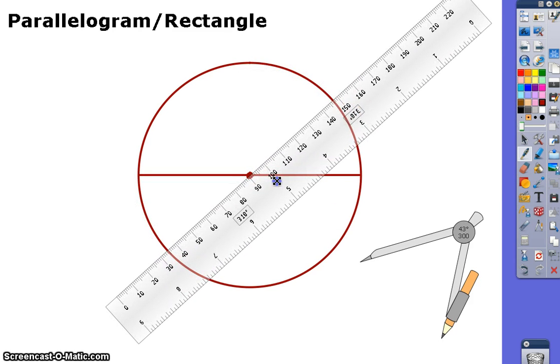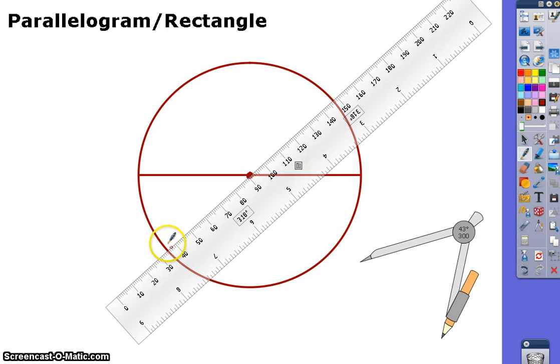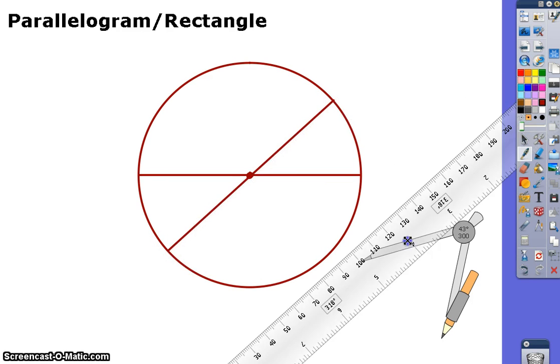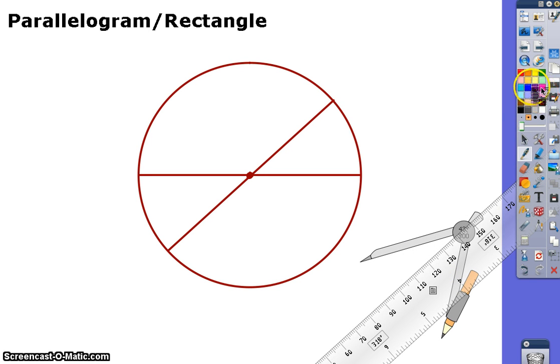what we ensure is that these are congruent since they're both diameters, and therefore we'll have a rectangle.